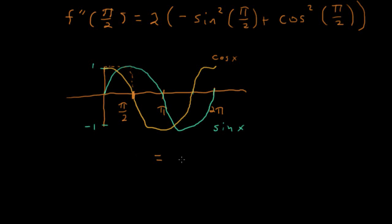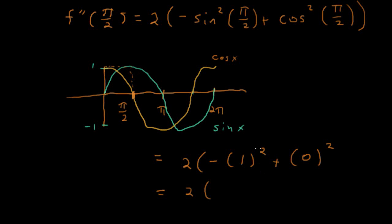So we have 2 times negative 1 squared — since sine of pi over 2 is 1 — plus 0 squared, since cosine of pi over 2 is 0. Negative 1 squared is negative 1, plus 0 is negative 1. So we have 2 times negative 1, which gives us negative 2.